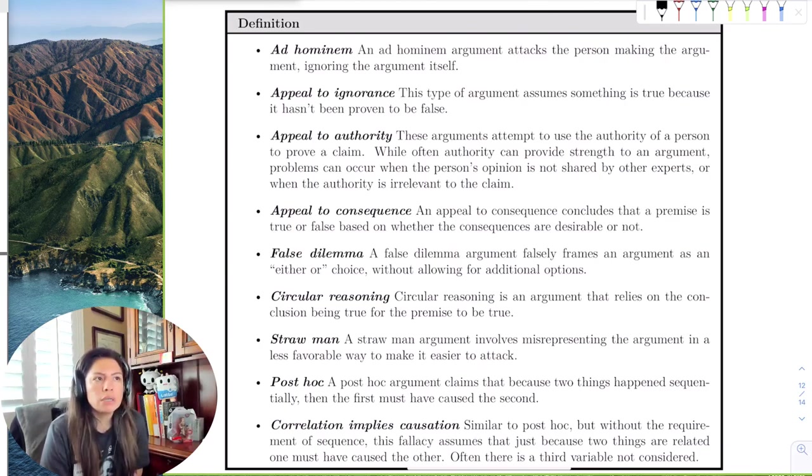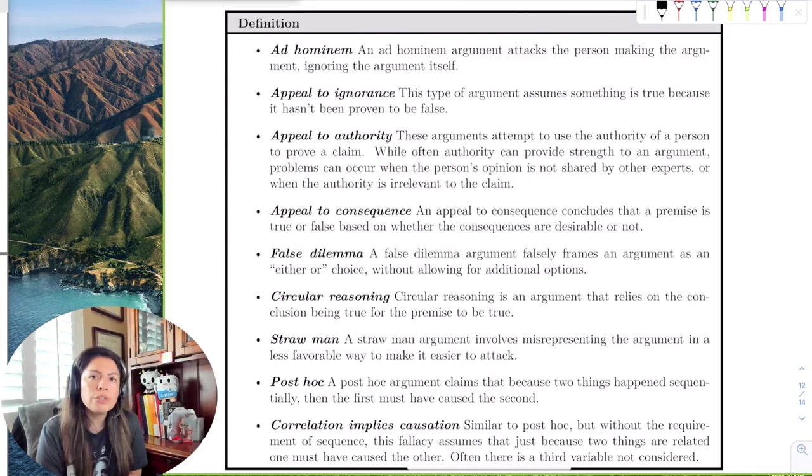The next one is appeal to consequence. The appeal to consequence means like you're making that decision based on what the consequence is versus the truth. So that's usually when, I guess, maybe like experimenting on drugs or sexual partners, things like that. The consequences don't seem too good. So you're just going to maybe lie or not have valid reasoning. Again, a lot of the times marketers appeal to consequence.